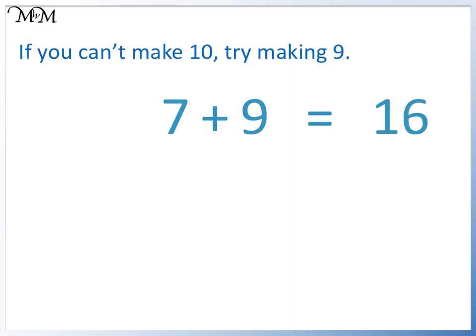We know that if we add 9 to a number, it will end in a digit that is 1 less than the other number. We add 9 to 7 and 1 less than 7 is 6. 16 ends in a 6.